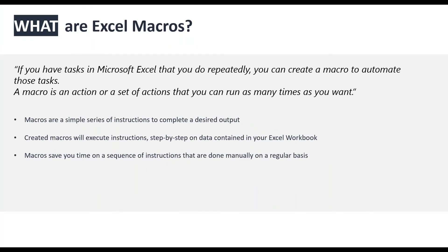So what are Excel macros? I've lifted this quote directly from the Microsoft site: if you have tasks in Microsoft Excel that you do repeatedly, you can create a macro to automate those tasks. A macro is an action or a set of actions that you can run as many times as you want. In VisibleThread, this means the ability to automate certain tasks in outputs that VisibleThread generates.